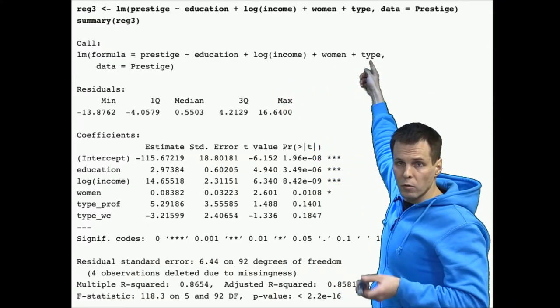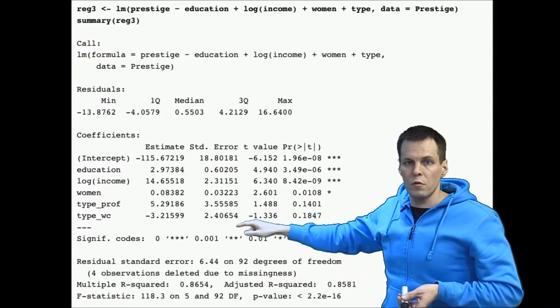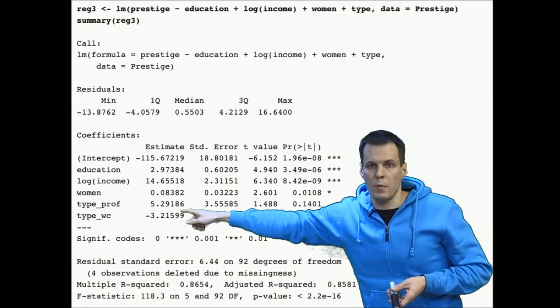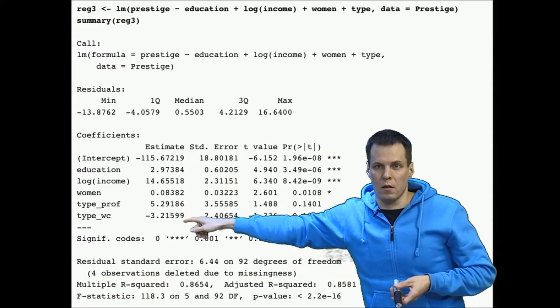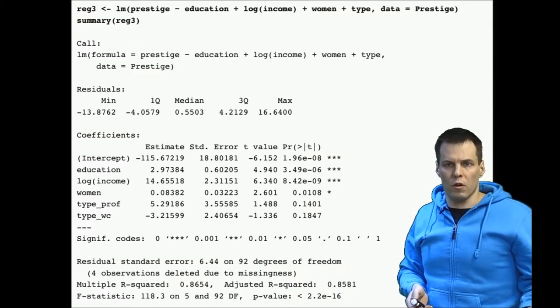R will automatically note this is a categorical variable and produce two dummy variables: type professional and type white collar. So how do we interpret those results and where is the blue collar profession?